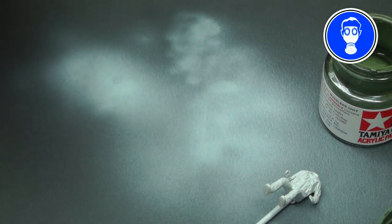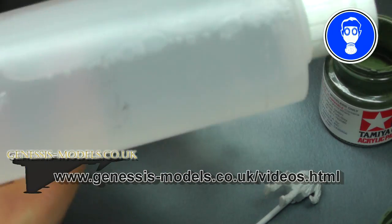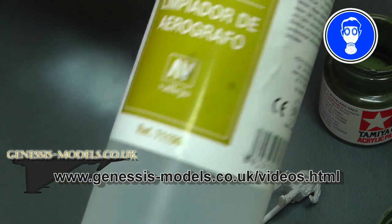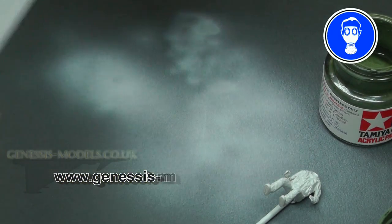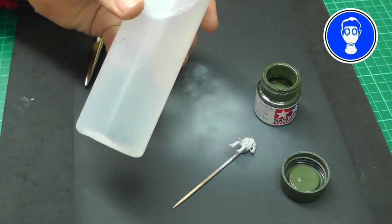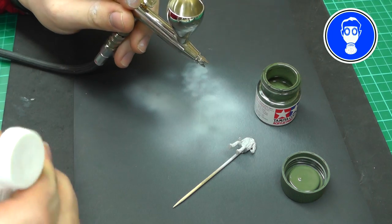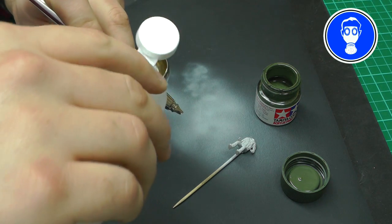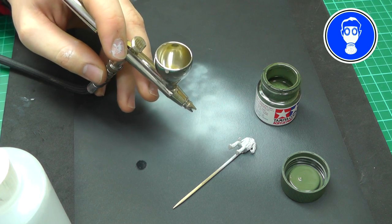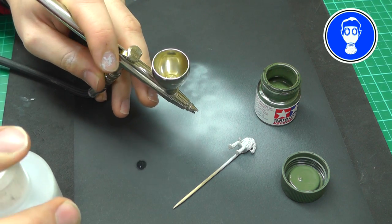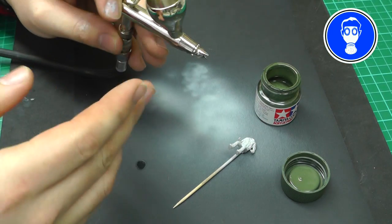Then what we want to do is get some, I'm going to be using homebrew thinners. There is a video on this on the Genesis Models website and I've just put it in this old Vallejo bottle. You want to put your thinners in first, about a 50-50 mix. We don't need much paint, we're only doing miniatures here.